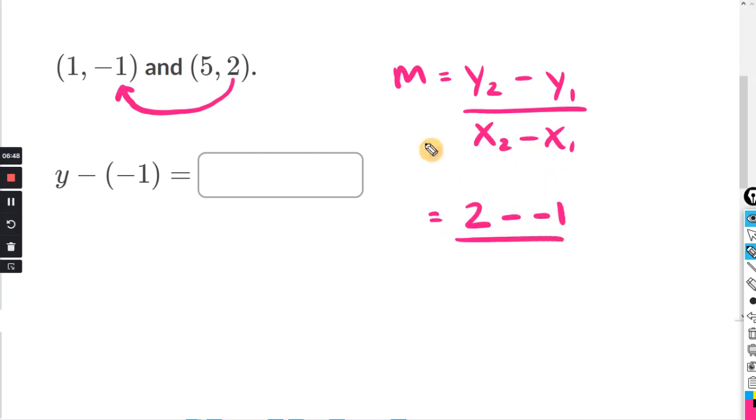And then for the x's, you've got to go the same way. 5 minus positive 1. So that's just 5 minus 1. 2 negatives in a row is positive. 2 plus 1 is 3. 5 minus 1 is 4. So that is your slope, m.